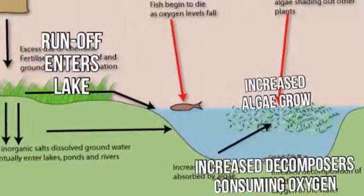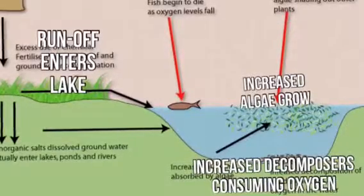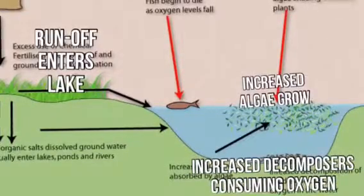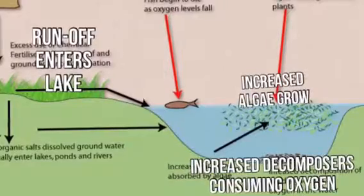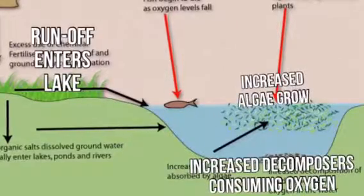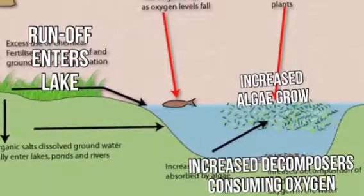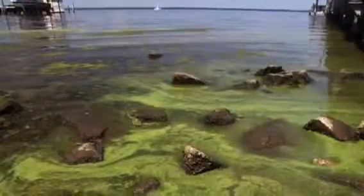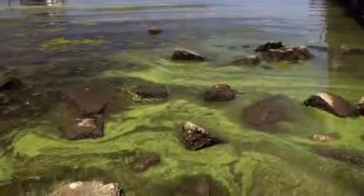Runoff is the main source of turbidity, which can block sunlight and oxygen from entering the water and harming organisms that need it. Humans can artificially speed up the process.